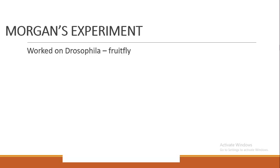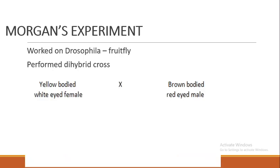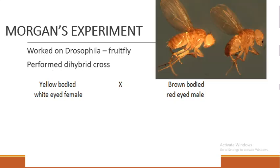Now we'll cover the last part of today's lecture — Morgan's experiment, where T.H. Morgan actually understood the concept of crossing over. He worked on Drosophila, the fruit fly seen in our last video. He performed a dihybrid cross. In a dihybrid cross, two characters are studied at a time. He studied the dihybrid cross between yellow-bodied white-eyed females and brown-bodied red-eyed males of Drosophila.